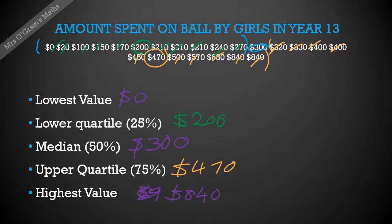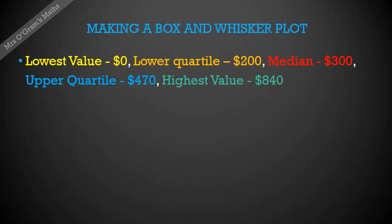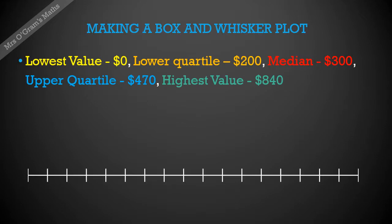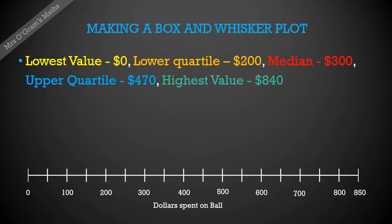And there's all the data that we'll need to be able to draw our box and whisker plot. Now we've got those values, we're going to put them onto a box and whisker plot. First we need a scale — we're going to run from zero up to a maximum of 840, so our scale needs to fit. Make sure you put a label on there: dollars spent on the ball, running from zero up to 850 to make sure we can cover the values we want.